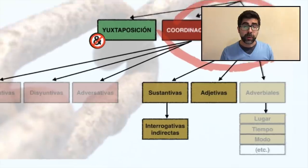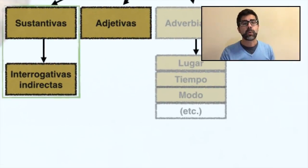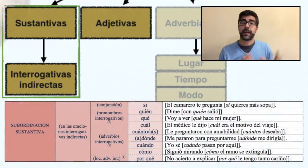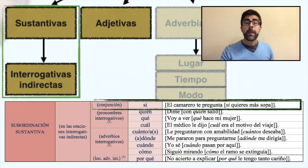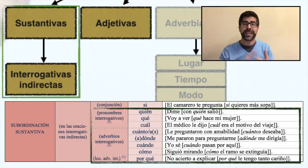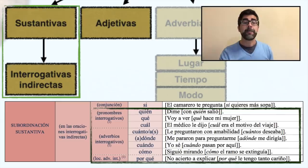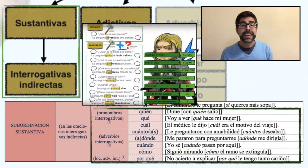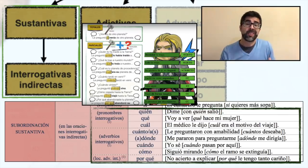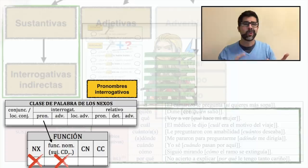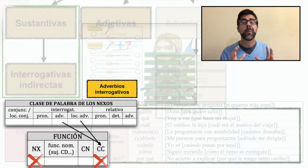Recuerda que hay un subtipo de subordinadas sustantivas que son las interrogativas indirectas, las cuales pueden aparecer introducidas por una conjunción —'el camarero te pregunta si quieres más sopa'— pero también pueden aparecer introducidas por una unidad interrogativa, como qué, cuándo, dónde, siempre escritas con tilde. En estos casos, el nexo es un pronombre, un adverbio o una locución adverbial, siempre con el apellido de interrogativos. Para averiguar la función que desempeñan aparte de la de nexo, basta con responder imaginariamente la pregunta que contienen. Los pronombres interrogativos desempeñarán funciones nominales, como sujeto, complemento directo, atributo o término de un sintagma preposicional, mientras que los adverbios interrogativos desempeñarán siempre la de complemento circunstancial.